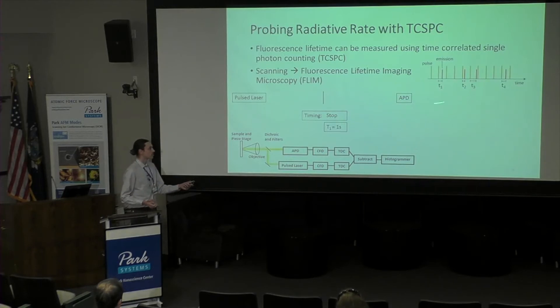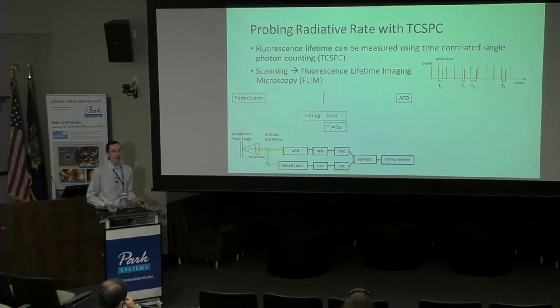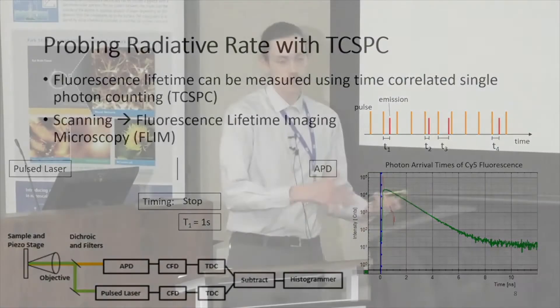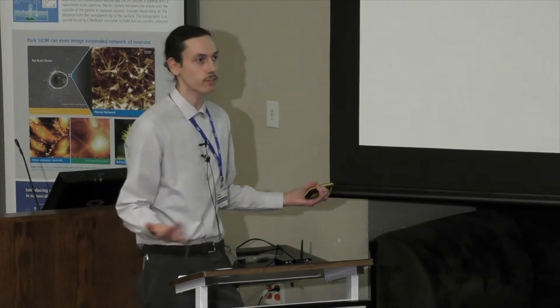Based on the delay between excitation and emission, you get a fluorescence lifetime. You collect a number of these delay times over time, histogram them, and from that you get a decay curve. By fitting this with an exponential, you can determine the fluorescence lifetime of your sample. By synchronizing this with a scanning piezo stage, you can look at the fluorescence lifetime at each pixel in a 2D grid and assemble an image of the fluorescence lifetime and how it fluctuates depending on your sample.